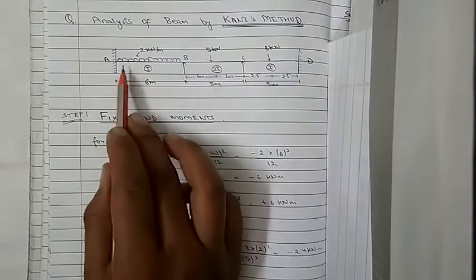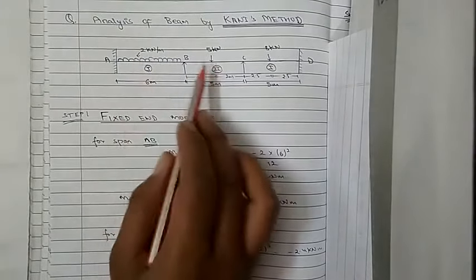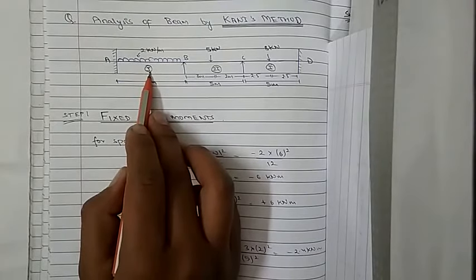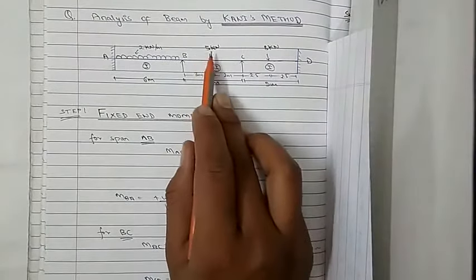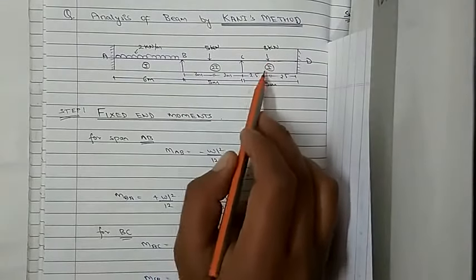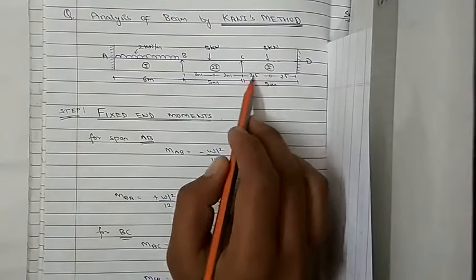Hello everyone, welcome to Online Engineering by SJ. Today we will discuss Kani's method. The beam has a UDL on a span of 6 meters, a 5 kN point load on a span of 5 meters at intervals of 3 meters and 2 meters, and an 8 kN point load at the middle of the 5-meter span.